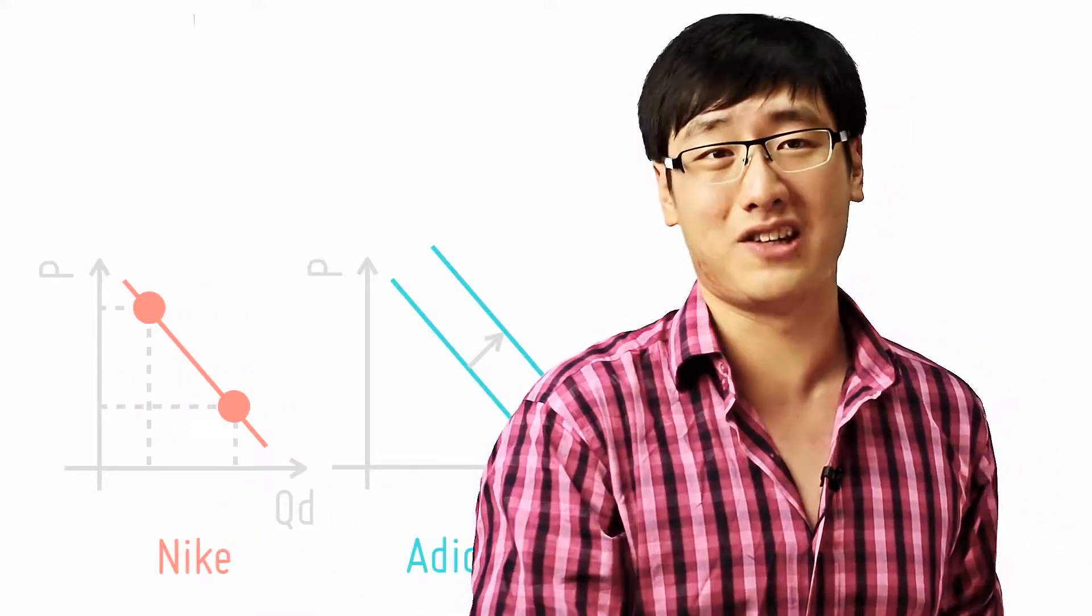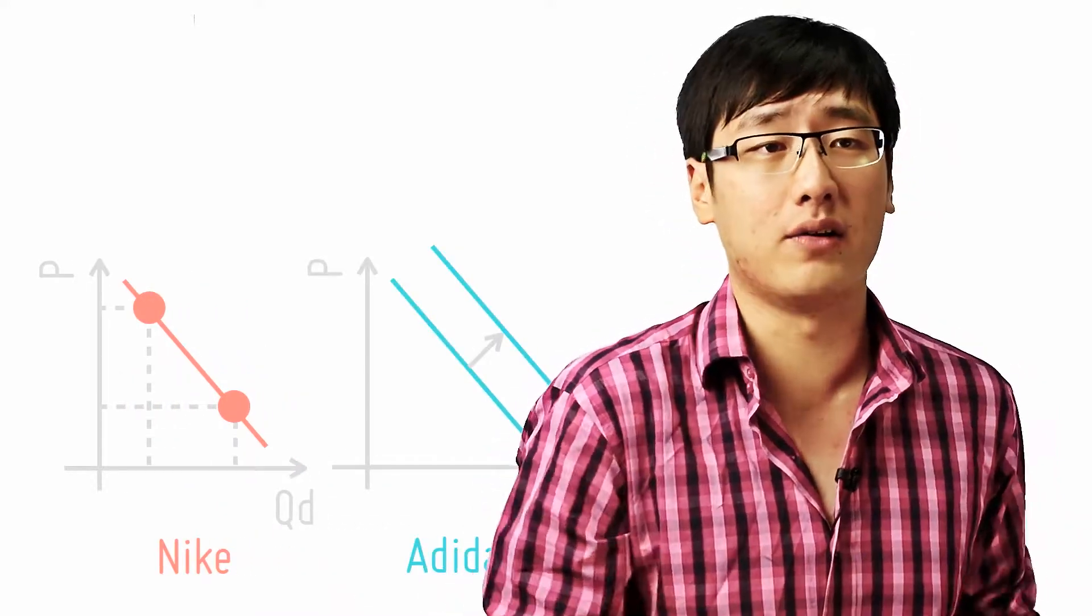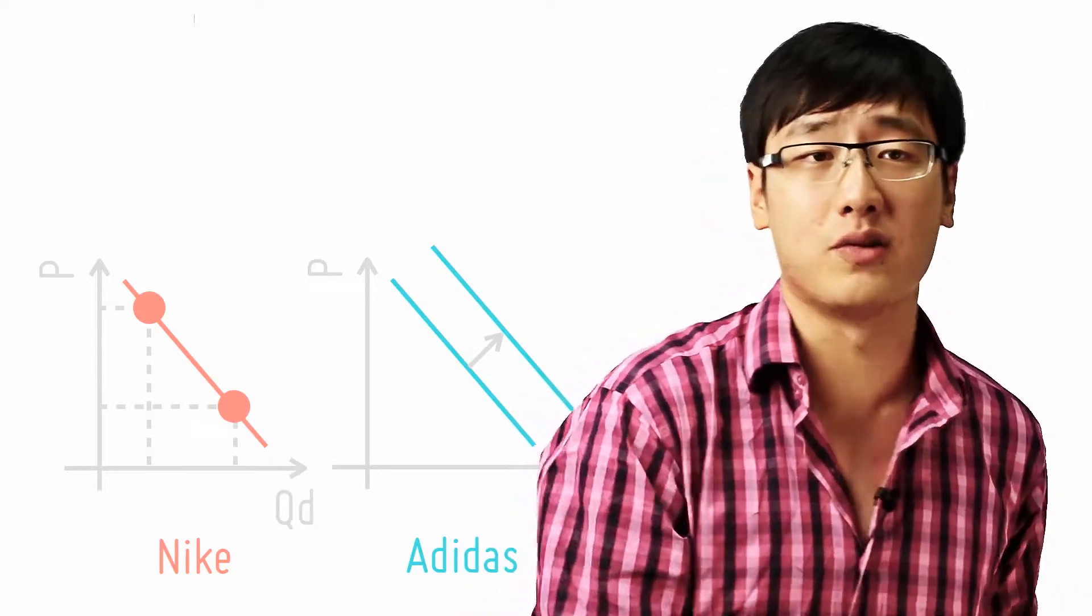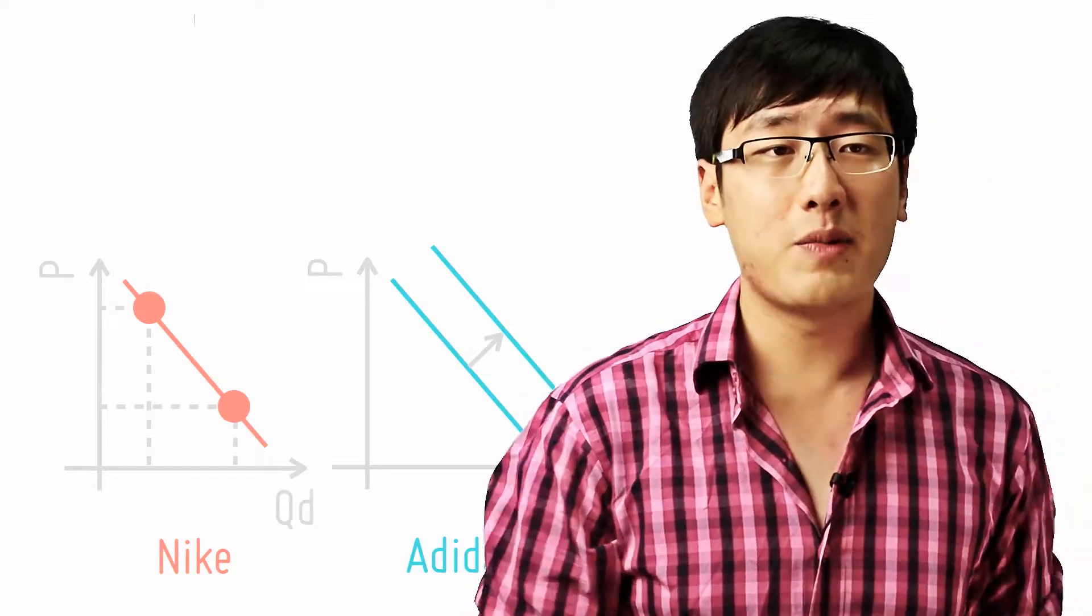These people will go buy Adidas, which hasn't changed its price at all. The demand of Adidas increases and this only happens because Adidas is a substitute for Nike. They both sell shoes. So when the sign is positive, the two goods are substitutes.